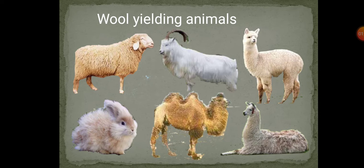Someone may have told you about a characteristic of yours — maybe your nose is like your mother's, your hair is like your father's, or your voice is like your grandparent's. This simply means our characters can match those of any parent. Similarly, the offspring of sheep will also have characters — including the type and quality of hair — matching those of their parents. For that purpose, parents are selected for obtaining special characteristics in the offspring. This process is known as selective breeding, so that the required quality of hairs can be obtained.